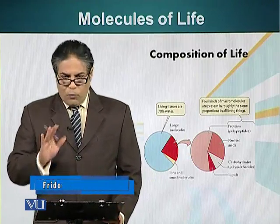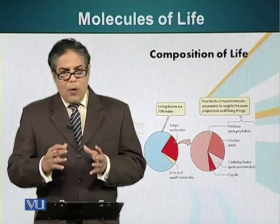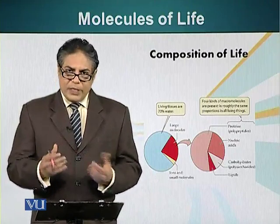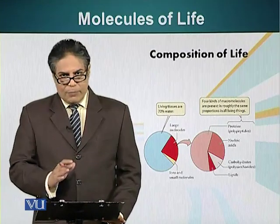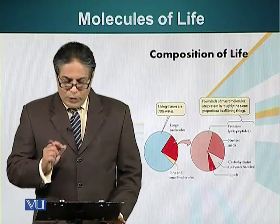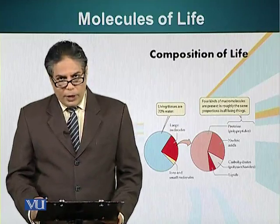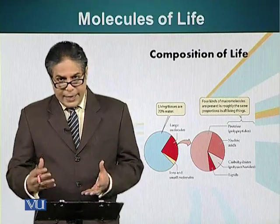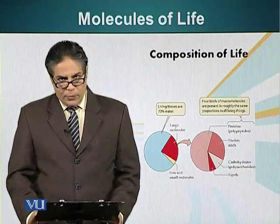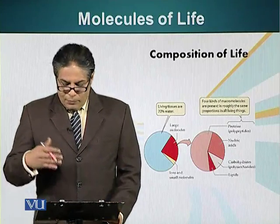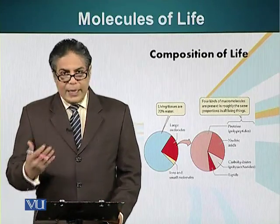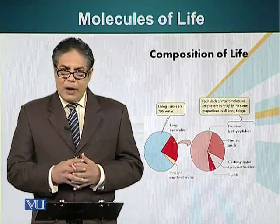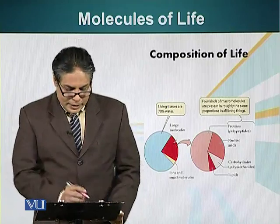Now let's look at these four large molecules and what percentage or which type of molecule is the major contributor. You will notice in the pie chart that the most abundant molecules in the cell are the protein molecules, followed by nucleic acids, which are the second most abundant. Then the carbohydrates, and then the lipids. We will look at the structures of these molecules and discuss their biological role in the next few modules.